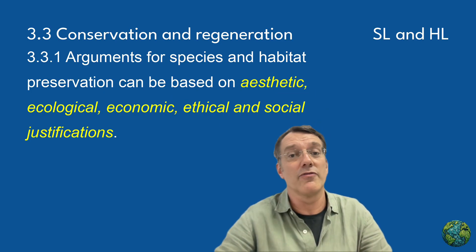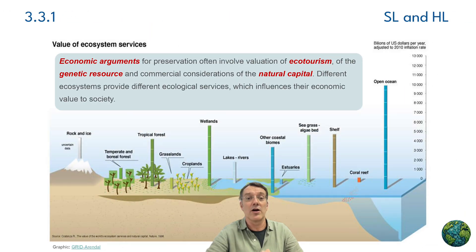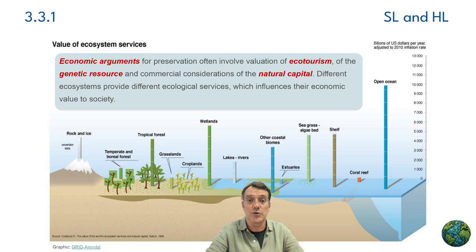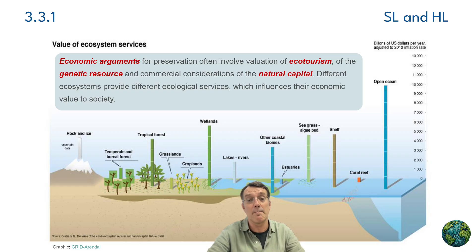Each perspective offers important insights into why biodiversity matters. Economic arguments for preservation frequently involve the valuation of ecotourism, genetic resources, and natural capital. Different ecosystems provide distinct ecological services, which influences their economic value to society. The chart shown here illustrates the enormous value of ecosystem services across various biomes globally, from forests to wetlands and coral reefs.